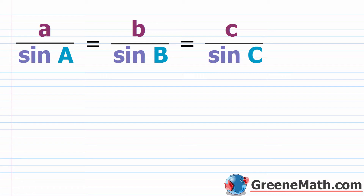That could be angle-side-angle (ASA) or side-angle-angle (SAA). That's the easy case — you just go immediately into using the law of sines, set up proportions, and solve for what you need. When you get to the ambiguous case, you're going to see side-side-angle, and now you have to dig into the details of the problem.